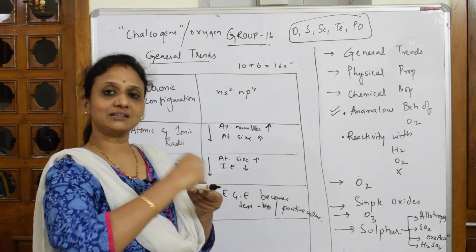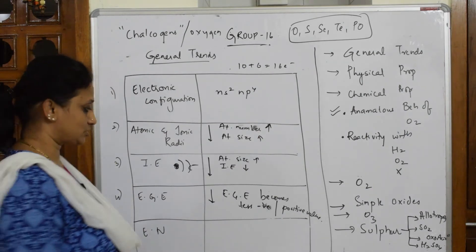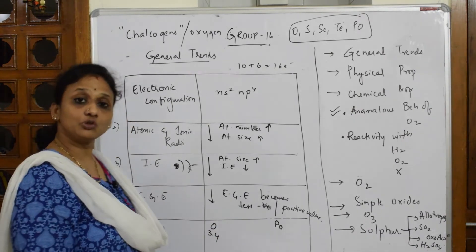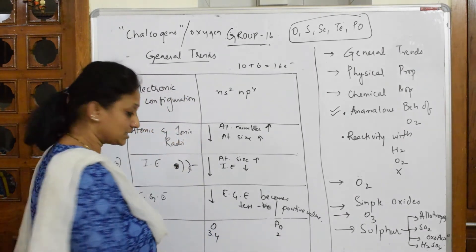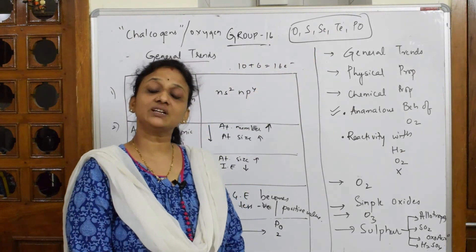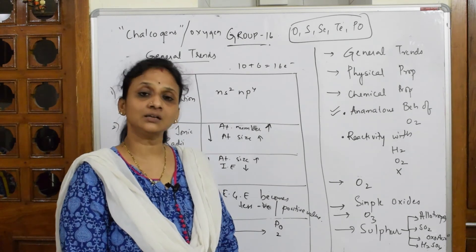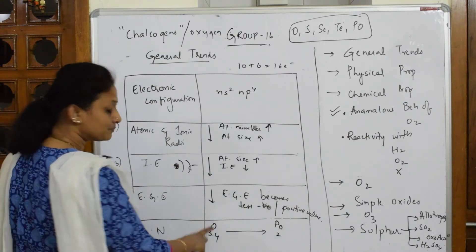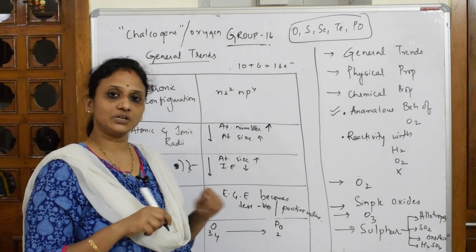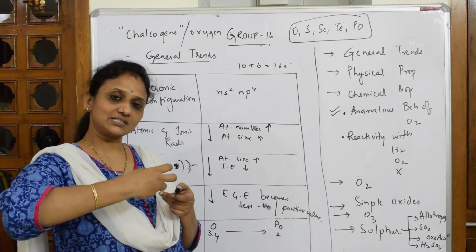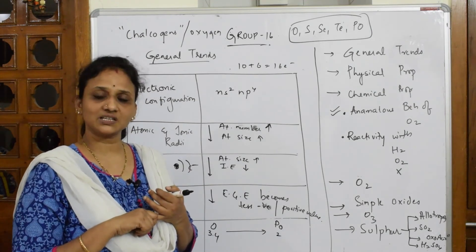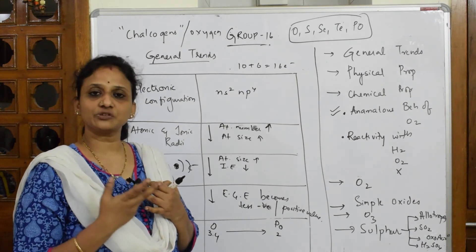Electronegativity is the ability to attract the shared pair of electrons. The electronegativity of oxygen is about 3.4, while polonium's electronegativity is about 2.0. So as we go down the group from oxygen to polonium, electronegativity decreases. When electronegativity is higher, it holds electrons tightly and won't donate them. When electronegativity is lower, electrons are held loosely and can be donated easily.